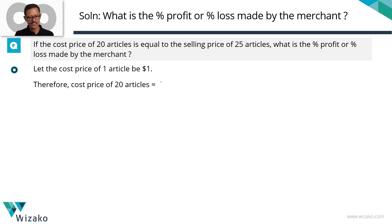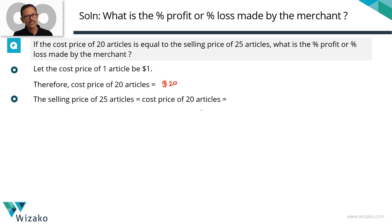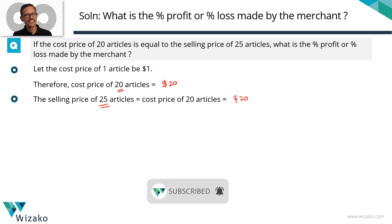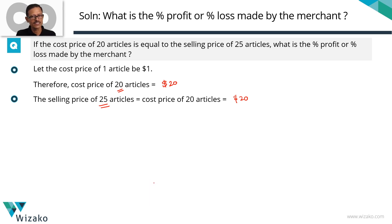Let the cost price of one article be $1. So the cost price of 20 articles is equal to $20. The question says the selling price of 25 articles equals the cost price of 20 articles, which we computed to be $20. Now we have the selling price of 25 articles and the cost price of 20 articles. It will be easier to compare selling price and cost price for the same number of articles.